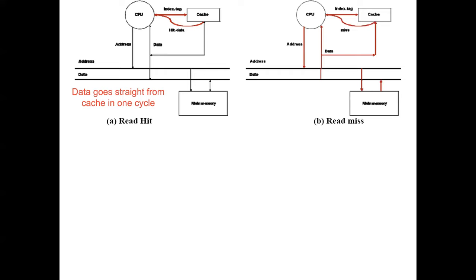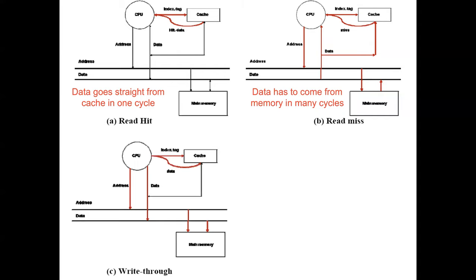We also need to understand what happens on a read miss. If we have a read miss, we need to retrieve the data from the appropriate address in memory, and this could occur over many cycles. Additionally, with write-through, data is written to the cache and it is also written to memory.